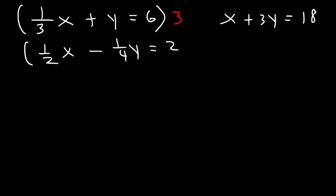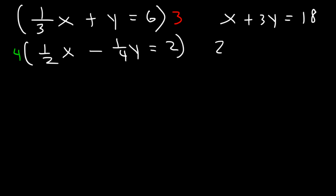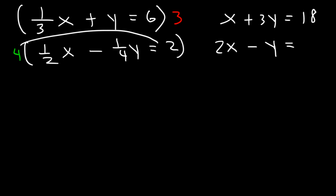Now, in the second equation, we need to multiply everything by 4 to clear away all fractions. 2 and 4 all go into 4. So 4 times one-half x — half of 4 is 2 — so this is going to be 2x. 4 times one-fourth is 1, so 4 times negative one-fourth y is negative y. And then 4 times 2 is 8.